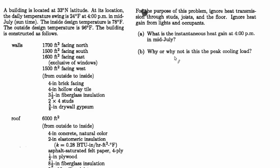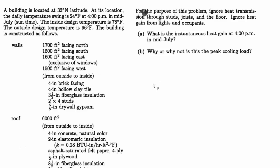We can work out the overall resistance. We have the same for the roof — we know the area, the building materials, and there's a certain area of windows with a specified window type. There's also some information about blinds. For the purpose of this problem, ignore heat transmission through studs, joists, and the floor, and ignore heat gain from lights and occupants. The question is: A) what is the instantaneous heat gain at 4 p.m. in mid-July, and B) why or why not is this the peak cooling load?